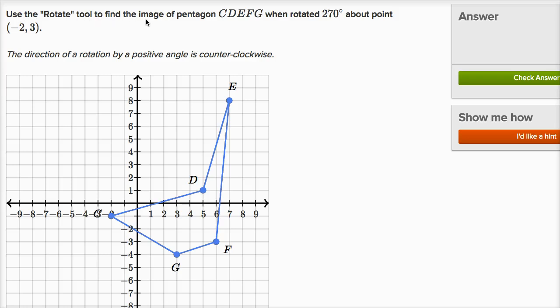Use the rotate tool to find the image of pentagon CDEFG, that's this irregular pentagon over here, when rotated 270 degrees about the point (-2, 3).